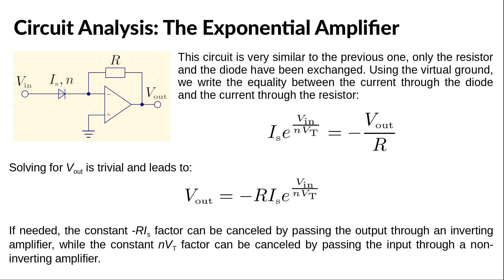The natural next step is to analyze the exponential amplifier. This circuit is very similar to the previous one — only the resistor and the diode have been exchanged. As before, we proceed by writing the equality between the current through the diode and the current through the resistor, which is trivially solved for Vout. Thus, the output voltage is a negative constant times the exponential of the input voltage divided by another constant. We can get rid of the minus R·Is factor by passing the output through an inverting amplifier, and similarly pass the input voltage through a non-inverting amplifier to get rid of the N·Vt constant.